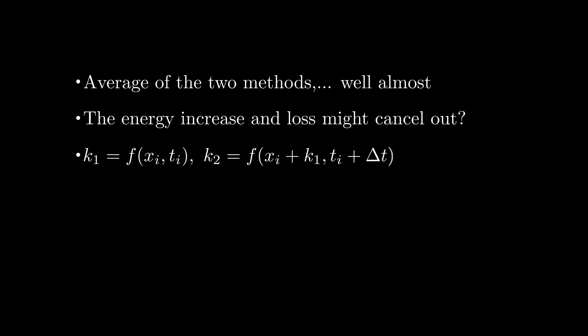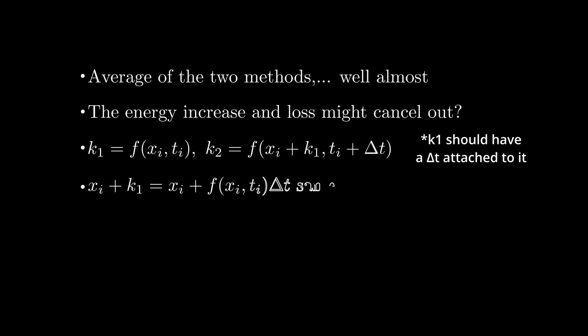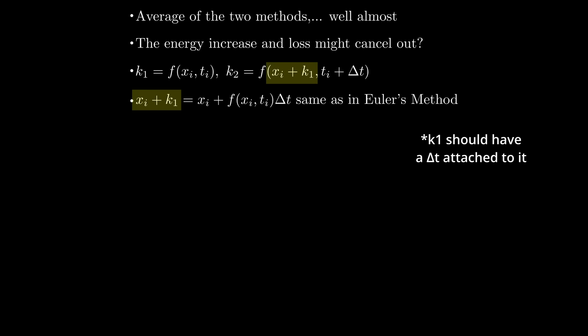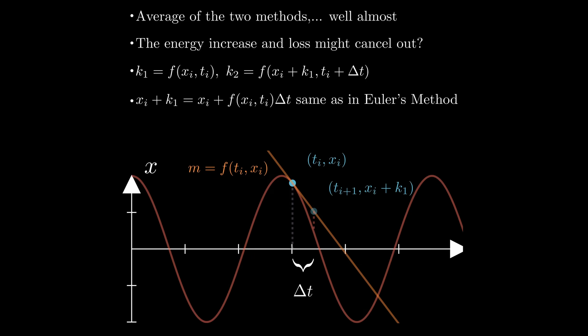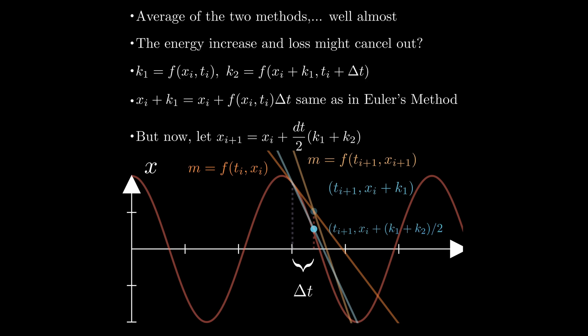We do this in the hopes that the energy increase of the explicit method might cancel out with the energy decrease of the implicit method. To do this, we calculate two values, k₁ and k₂. Notice that the value we plug into k₂, xᵢ plus k₁, is the same value that we calculate for Euler's method. So we essentially have f(x, t), which remember is the slope of our function, at both increments i and i+1. Now we let our value x_{i+1} be equal to xᵢ plus the average of k₁ and k₂, and then of course times dt.